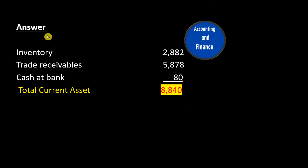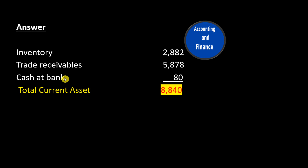Answer: Inventory $2,882. Trade Receivables $5,878. Cash at Bank $80. Total Current Assets $8,840.